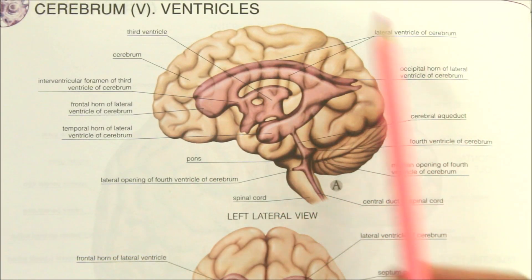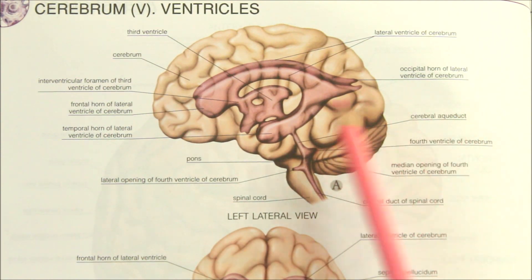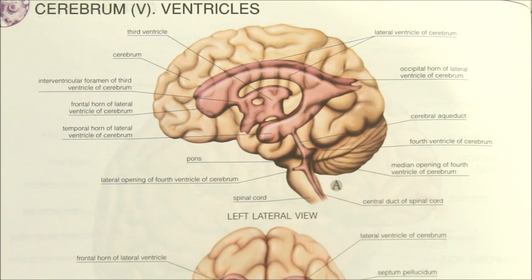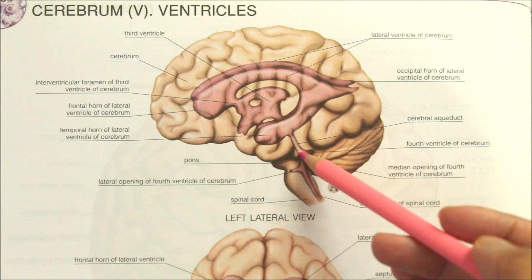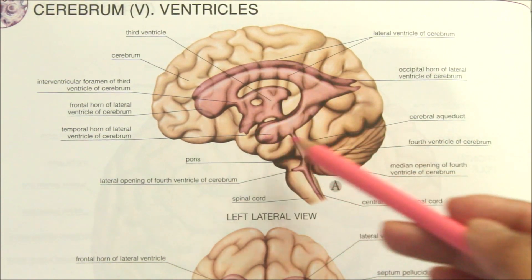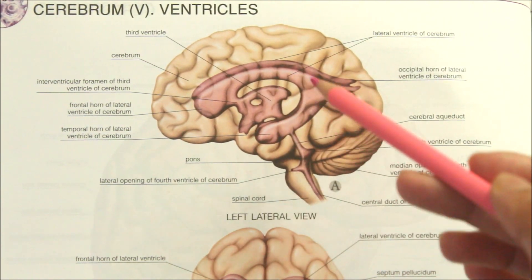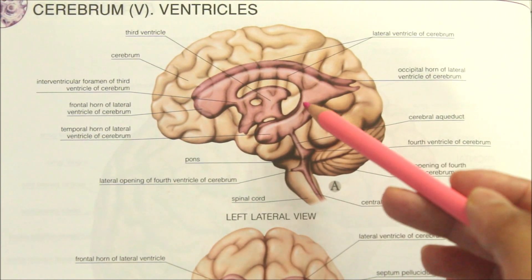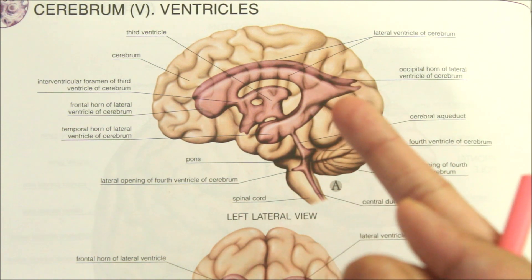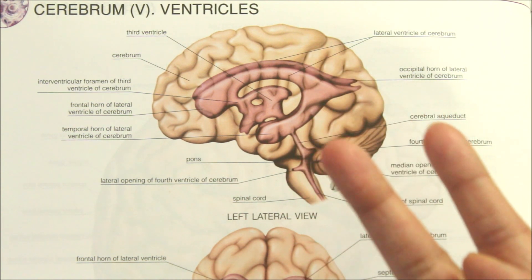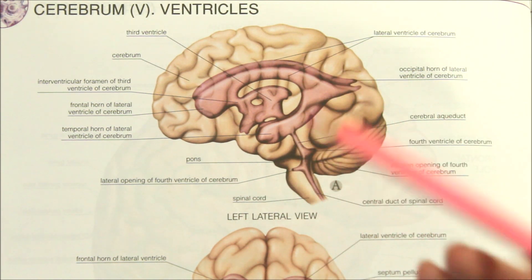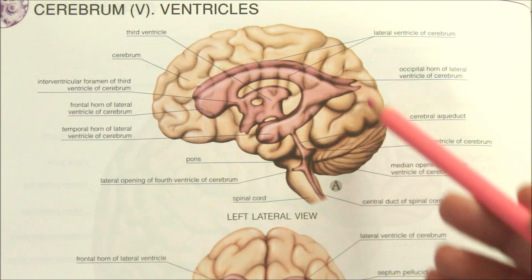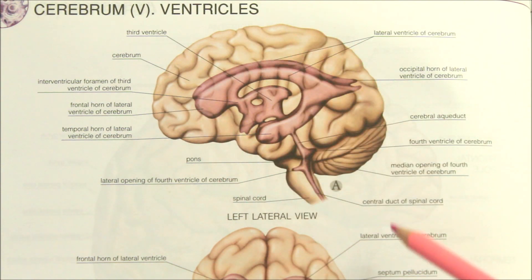This is a left lateral view of the cerebrum showing the ventricles of the brain. The ventricles are a set of communicating cavities within the brain, responsible for the production, transport and removal of cerebrospinal fluid which bathes the central nervous system.